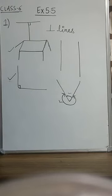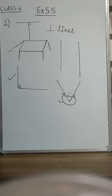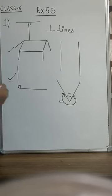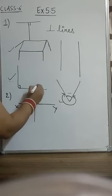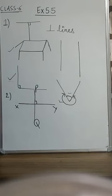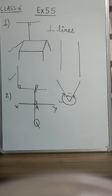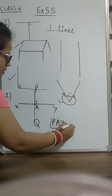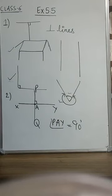Now we are coming to question number 2. You can read it from the book. PQ is perpendicular to the line segment XY. In the question, we have line XY with points P and Q — they are intersecting at point A. We have to find angle PAY. Since PQ is perpendicular to XY, the angle is 90 degrees, as you can also see from the figure.